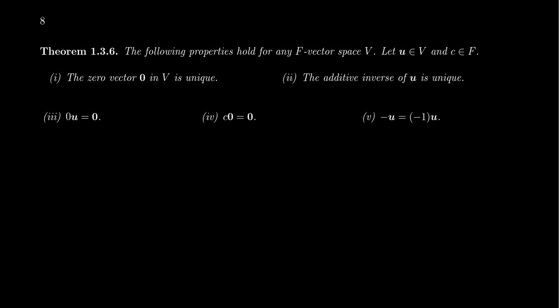In this final video for section 1.3 about vector spaces, I just wanted to mention some elementary properties for vector spaces. For any vector space V whose scalars come from the field F, we have the following five properties. These are very elementary properties, many things we take for granted. For a generic vector V inside the vector space and some scalar C, the following properties can be true.